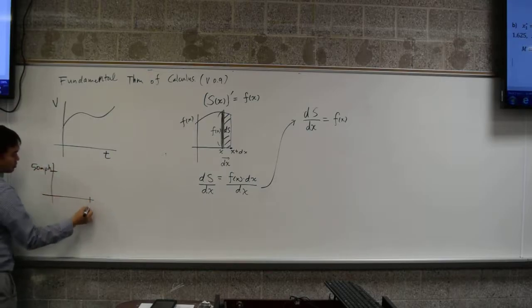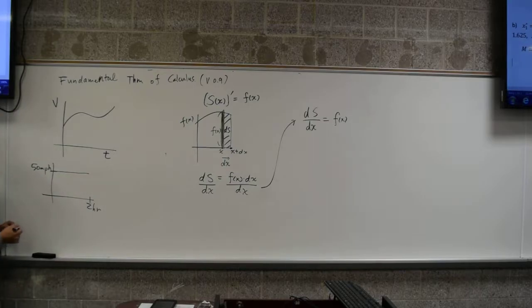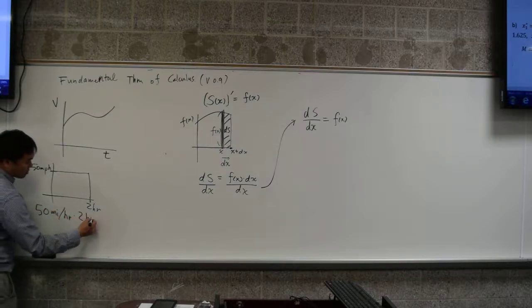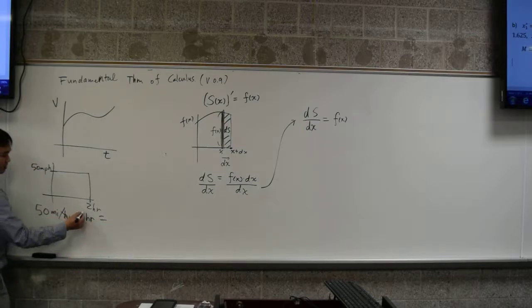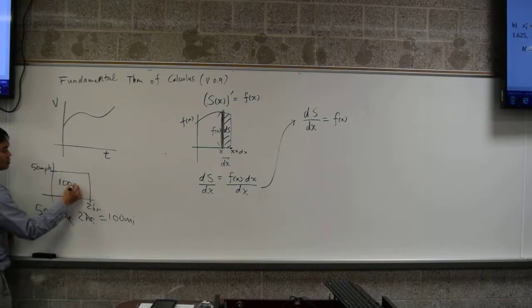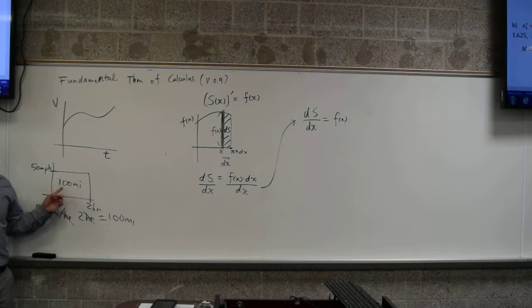So, if you had like 50 miles per hour, and you had time t, and this was like two hours here, and you went at a constant speed of 50 miles per hour, and you do 50 miles per hour times two hours. What do you get? Distance. You get 100 miles, which is? Which is the distance traveled, right?